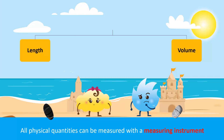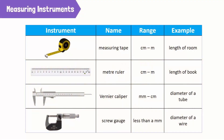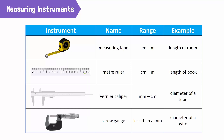We can measure the length or the volume of the pebbles. Let's measure the length of the pebbles first. There are different instruments that can measure length depending on the accuracy that we need. A measuring tape can measure objects from a few millimeters up to a few meters. A meter rule can measure in millimeters and centimeters.